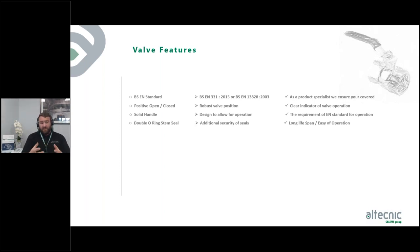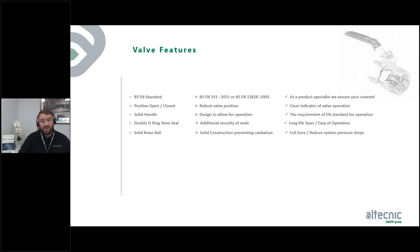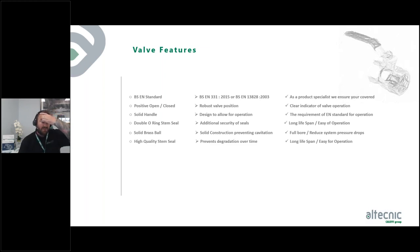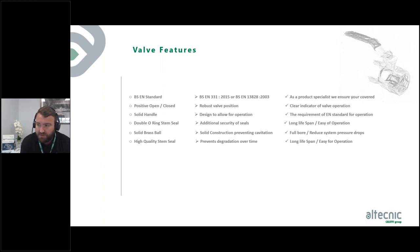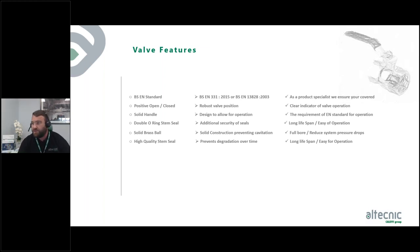The double O-ring on the stem provides additional security for the seal, a longer lifespan, and ease of operation. We also have a solid brass ball — solid construction prevents cavitation; some cheaper valves on the market are only coated rather than solid, and cavitation can cause corrosion over time. Our full bore system reduces system pressure losses. High-quality stem seals are also important: lower-quality materials can harden and become brittle over time, making the valve difficult to operate, so we use high-quality material to ensure the same smooth operation every time.